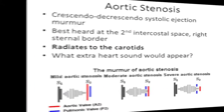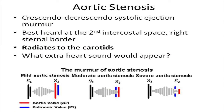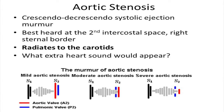Blood flow through the stenotic valve causes a characteristic crescendo-decrescendo murmur heard during systole. This murmur is commonly described as an ejection murmur and follows a sharp ejection click. The murmur radiates to the apex and carotids.